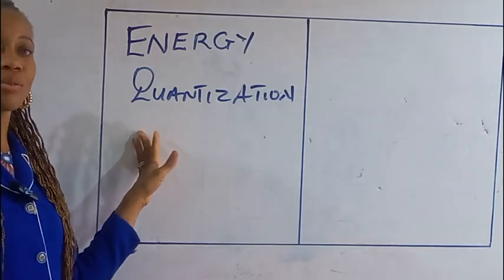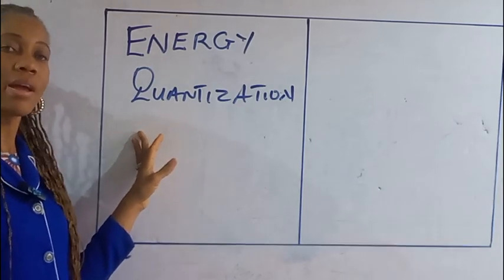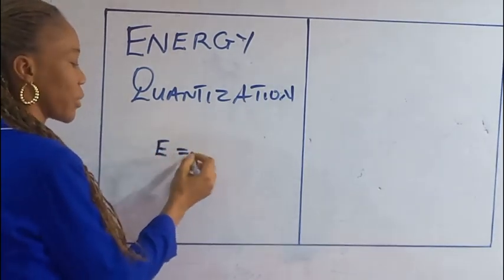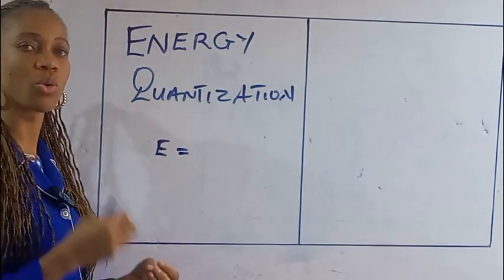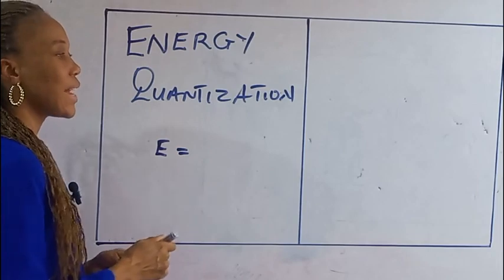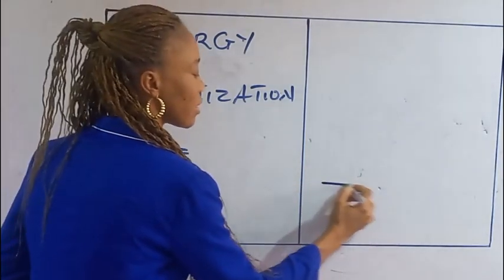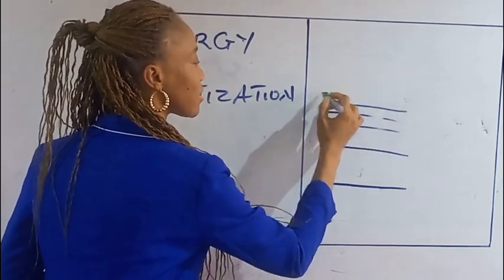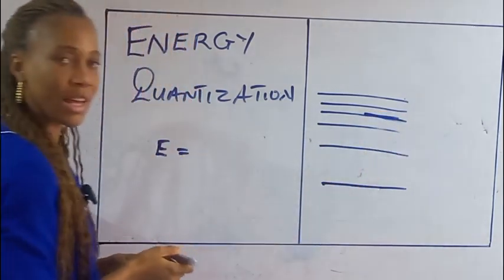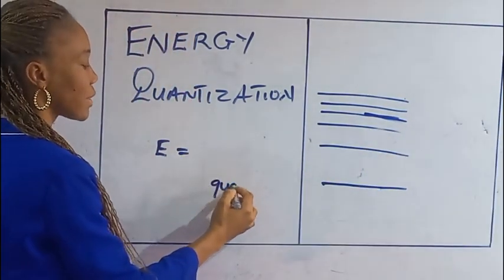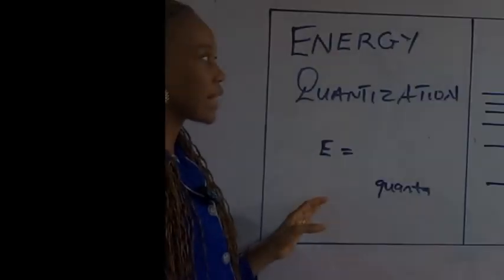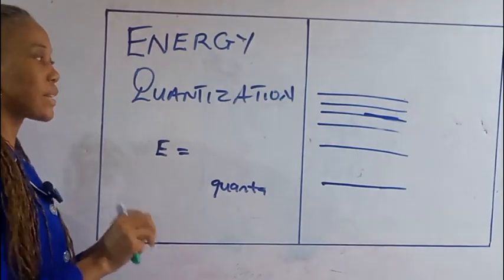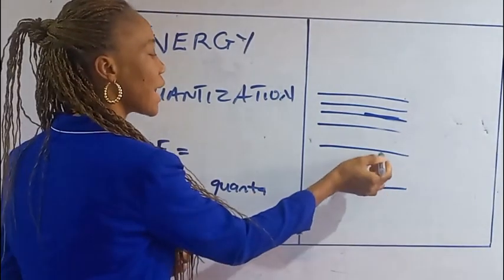This topic deals with how energy is emitted in discrete quantities called quanta. It means that energy is emitted at different levels, because we cannot have any in between. That's why we call it quanta — energy is emitted in specific discrete amounts called quanta. We cannot have any in between.